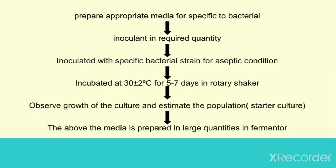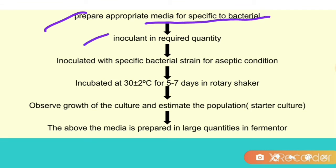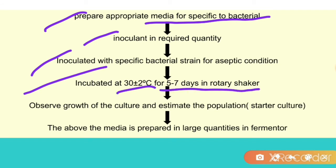Now let's see how we can do production. First, prepare appropriate media specific to the bacterial level and inoculant in the required quantity. We have to prepare a media which is specific or a general media, then inoculate it with a specific bacterial strain under aseptic conditions. Then incubate at 30 ± degrees Celsius for 5 to 7 days in a rotary shaker.